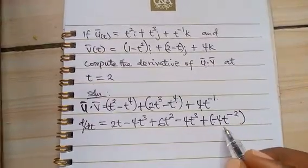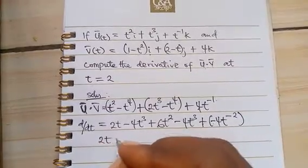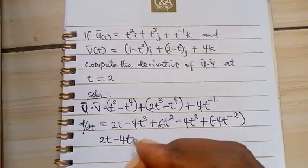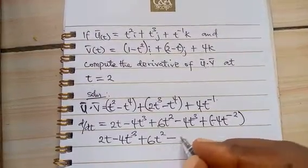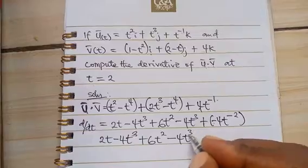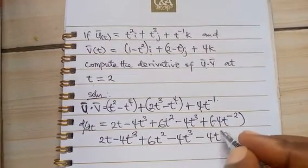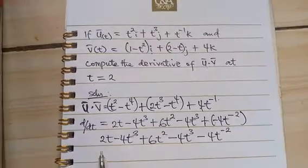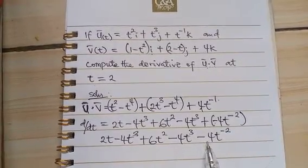So if we rewrite this whole thing, we're going to have 2t minus 4t³ plus 6t² minus 4t³ minus 4t^(-2). So this is it. We have gotten the derivative of this vector.